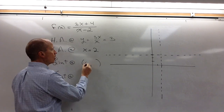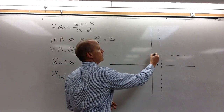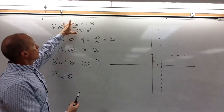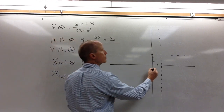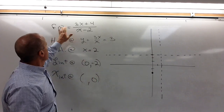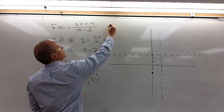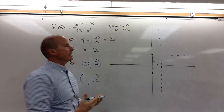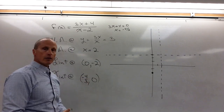The y-intercept is very easy to find — all you have to do is put zero in for x, because if x is zero, you're on the y-axis. If I put zero in for x, I'm left with 4 in the numerator and −2 in the denominator, so it's crossing the y-axis at −2. The x-intercept happens when y is zero. The only way a fraction can equal zero is if the numerator is zero — set the numerator equal to zero and solve. In this case, we get x = −4/3, so that's the x-intercept — basically negative one and a third.